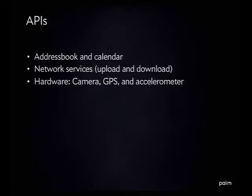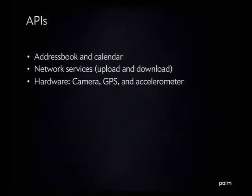There's a whole bunch of APIs in the platform — I can't possibly go through them all today. All the APIs are provided in JavaScript. There are basic application APIs like the address book and calendar, access to local storage, and network services. We also provide additional ones for uploading and downloading with progress detection. So you can, say, take a picture with the camera and upload it and find out if the upload failed, succeeded, or how far along it's gone to show results to the user. And then, of course, all the hardware features have their own APIs.